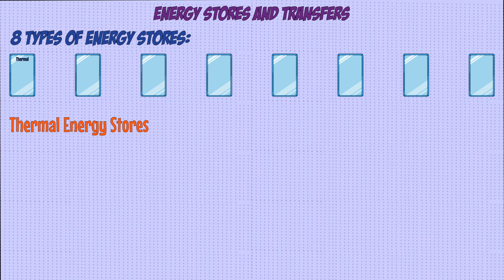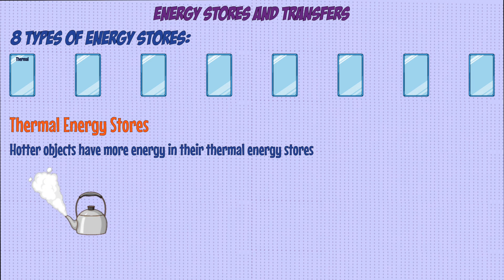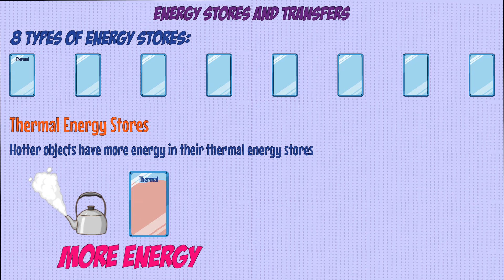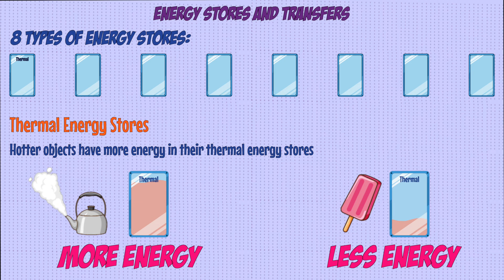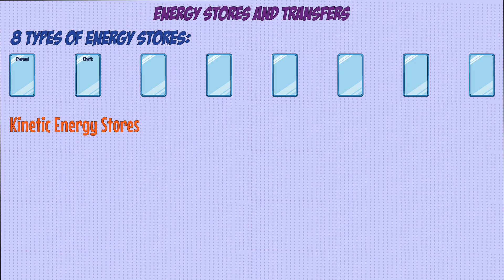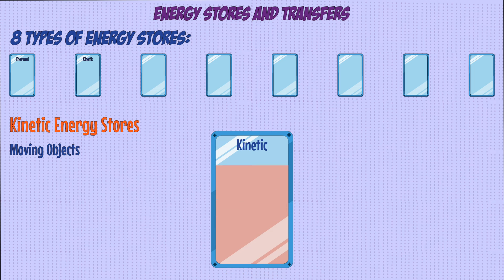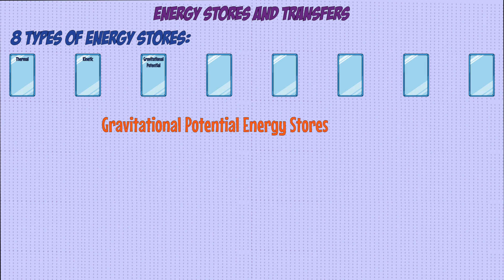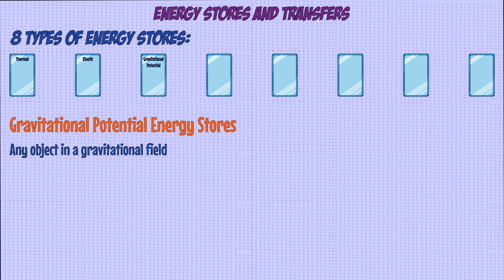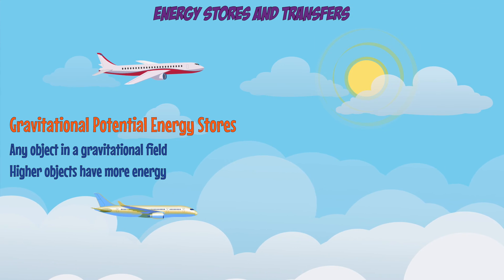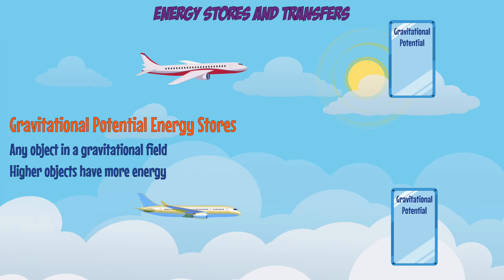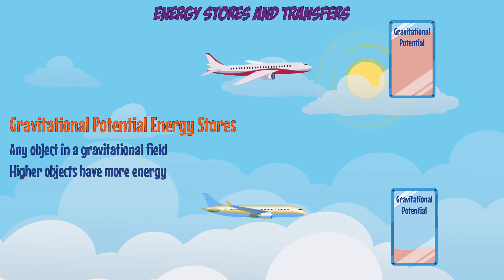The first type of energy store is thermal energy. Pretty much every object in the universe has thermal energy, but hotter objects have more energy in their thermal store than colder objects. The second type is kinetic energy — any object that moves, like a car or a falling object, has energy in its kinetic energy store. The third is gravitational potential energy, which any object in a gravitational field has. It depends on height, so the higher an object is above the ground, the more energy it has in its gravitational potential store.